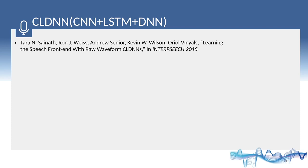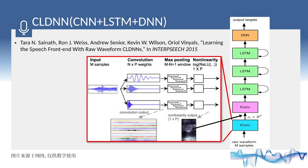In 2015, researchers proposed the CLDNN (CNN+LSTM+DNN) framework to learn the speech front-end from raw waveforms. DNN is suitable for feature mapping to independent spaces, LSTM has long and short-term memory capacities, and CNN is good at reducing the diversity of speech signals. A good speech recognition system is therefore a combination of these networks.